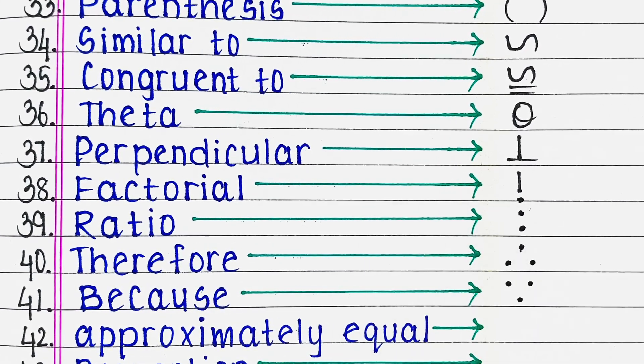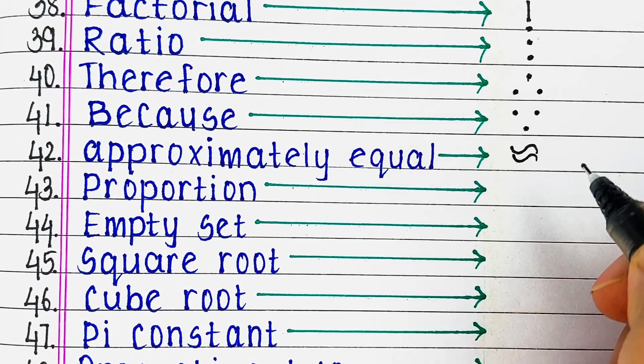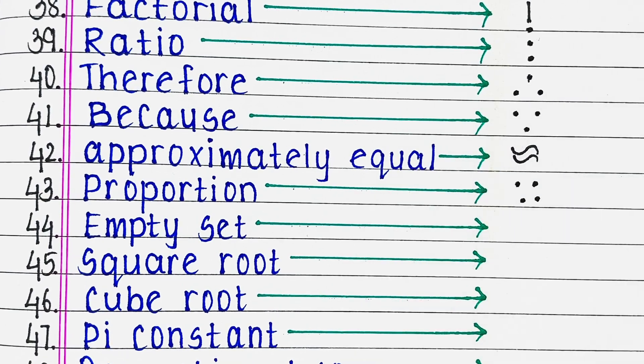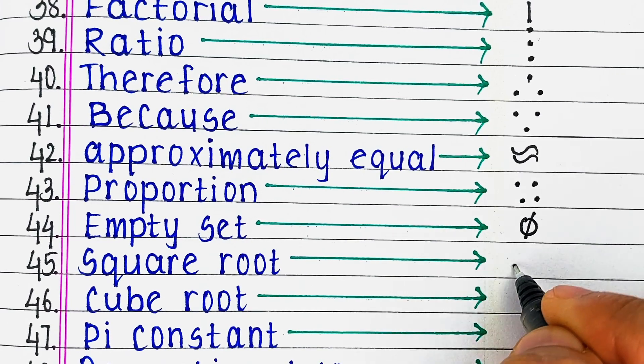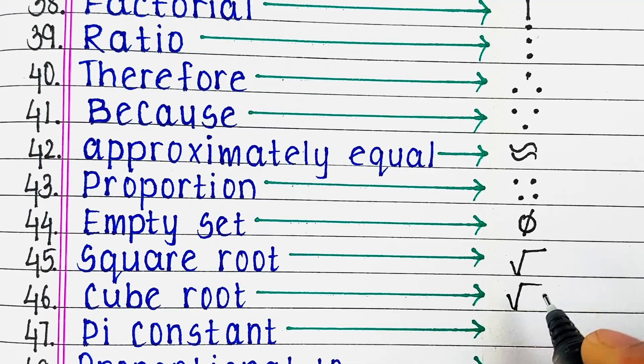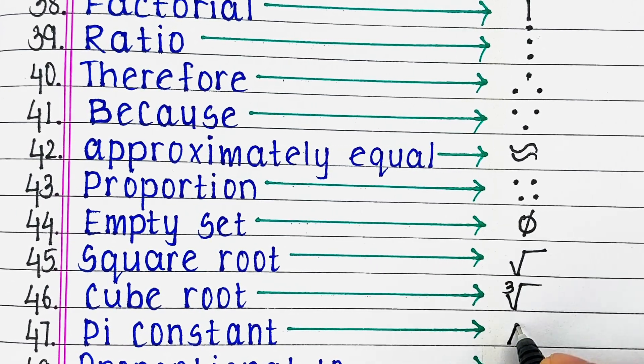Next approximately equal, next is proportion, next empty set, next is square root, next cube root, next pi constant.